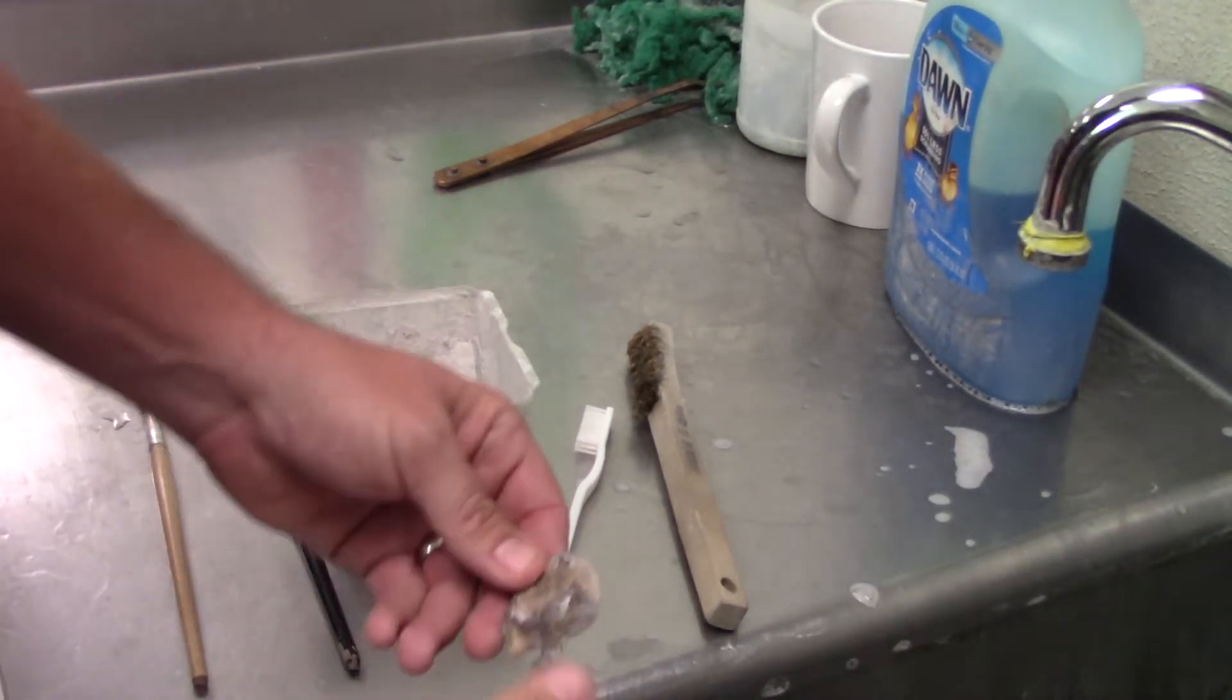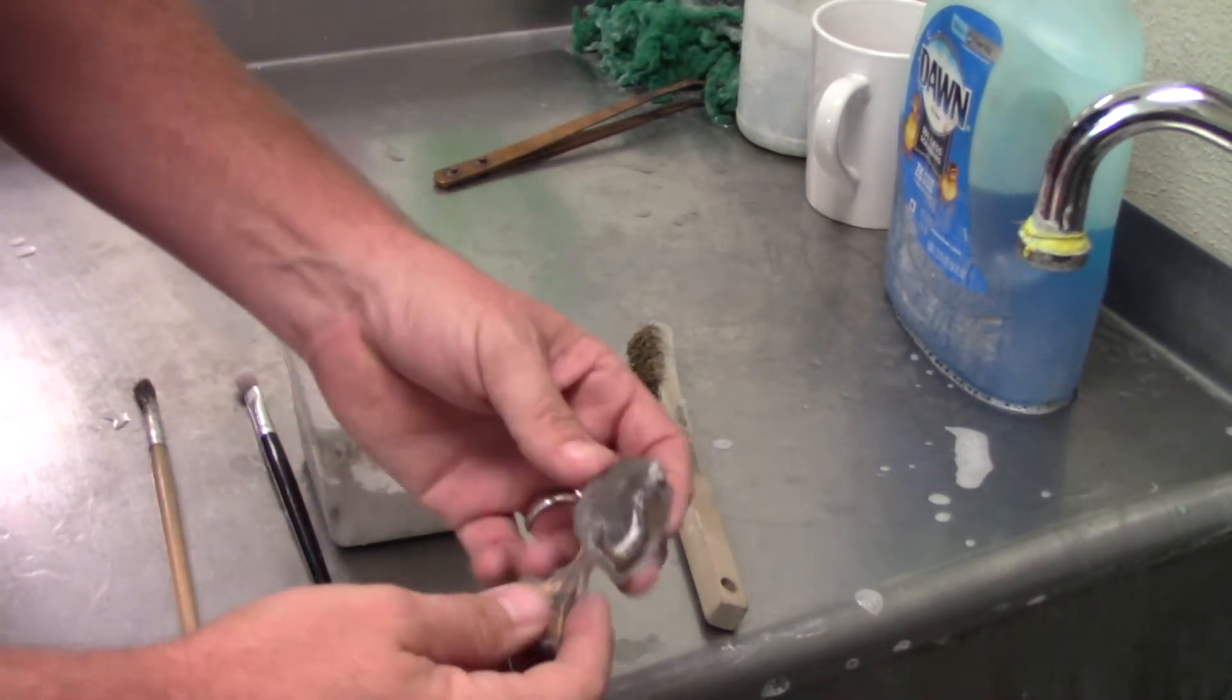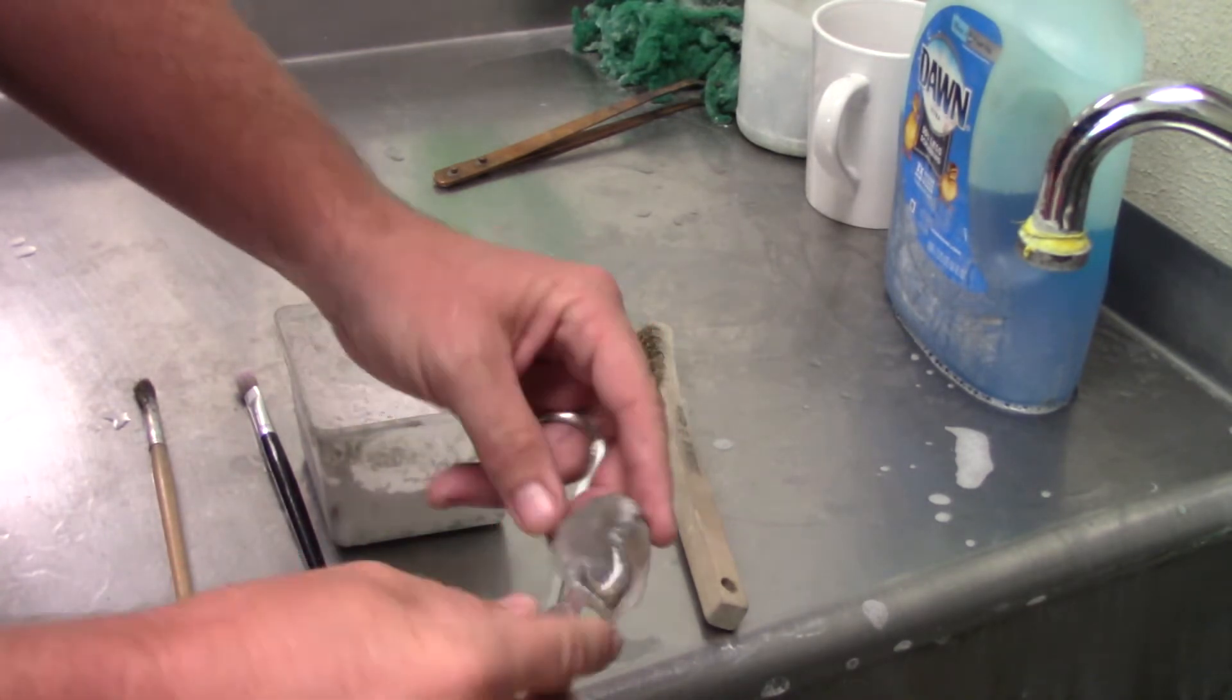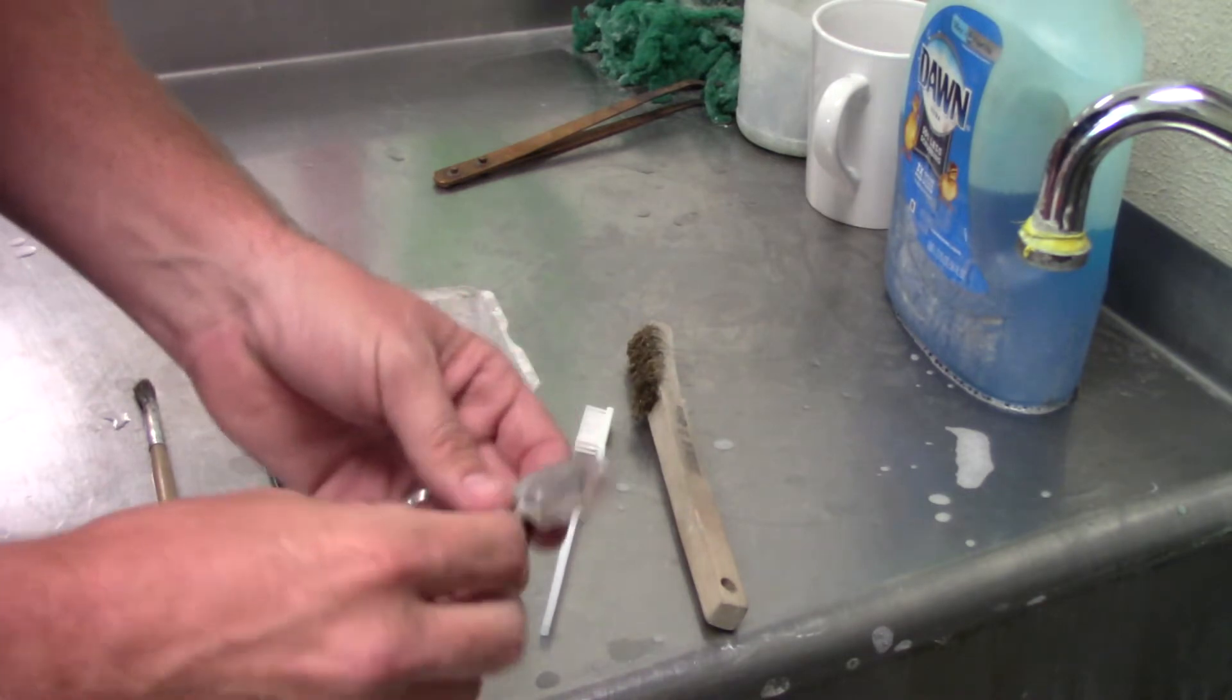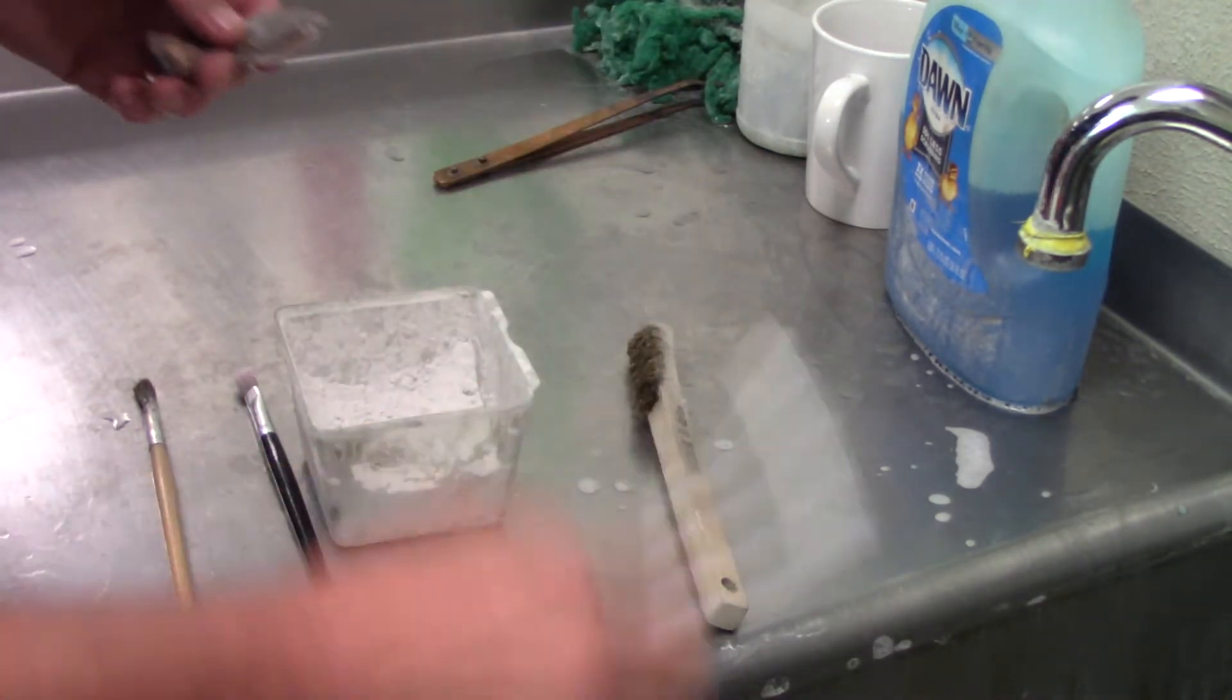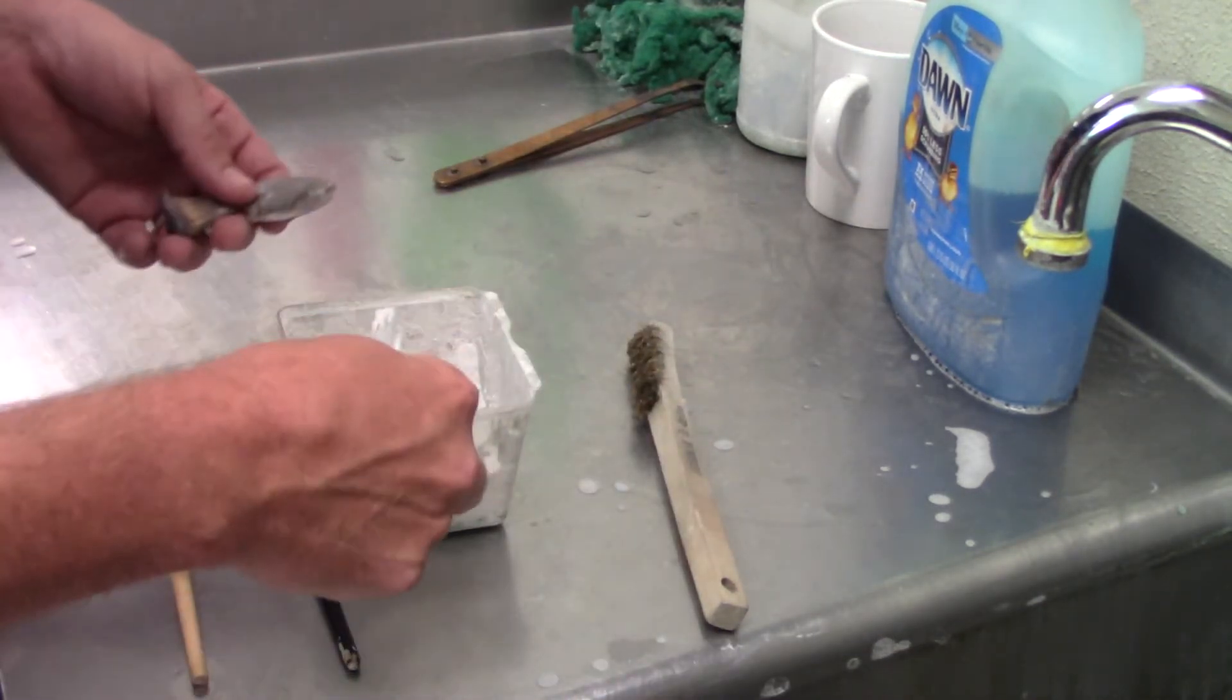It's time to clean up your cuttlebone casting. You can see it's got these remnants of white stuff left in here. What we're going to do to get that stuff out is use a toothbrush and pumice, if you have it.